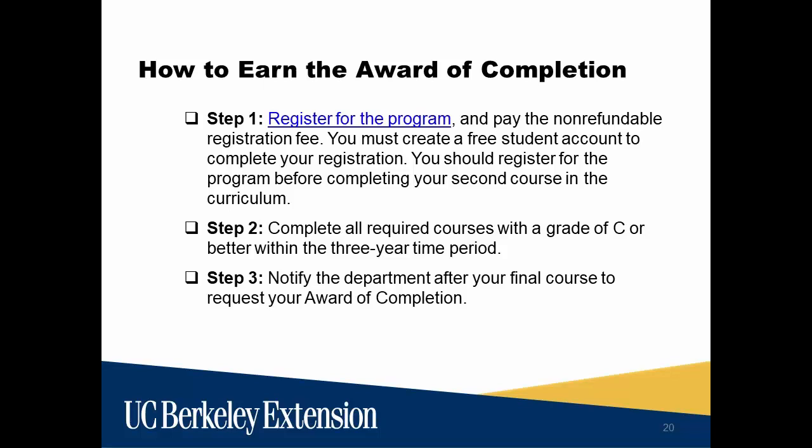To earn the certificate, you'll need to register for the program and pay the $150 registration fee. We recommend you do this before you complete your second course, as this protects you in case we make any changes to the program's curricula. If you're already registered, you can choose to complete the original program or switch to an updated program. You'll need to complete all the required coursework with at least a grade of C or better, you'll have a total of three years to complete the program, and you'll need to notify the department after you receive your grade in your final course to request your award of completion.